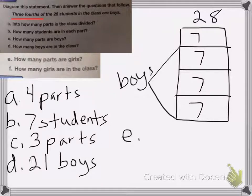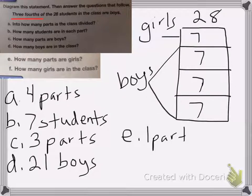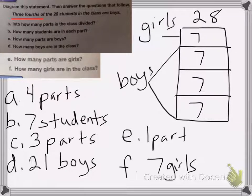E asks how many parts are girls? Well, if three parts are boys, that means that this one part left has to be the girls. So it means there is one part are the girls. And the last question, F, how many girls are in the class? Well, there's only one part, so there are seven girls in the class, okay?